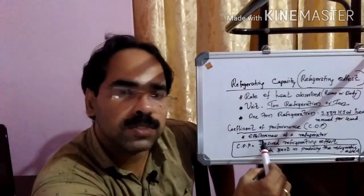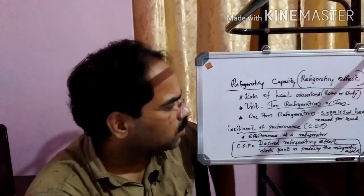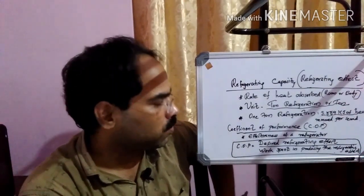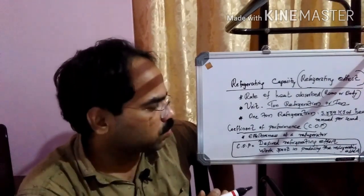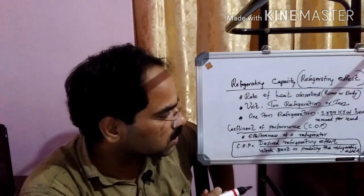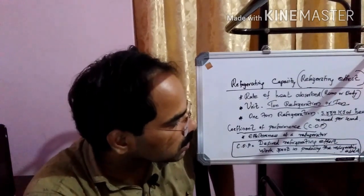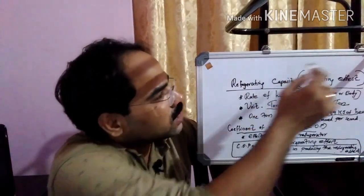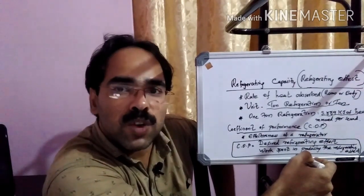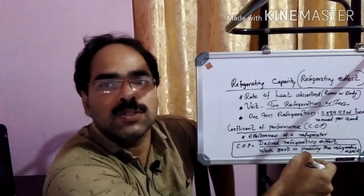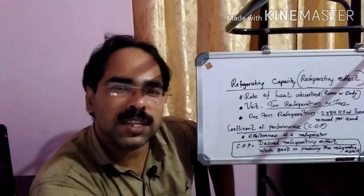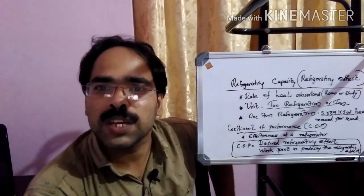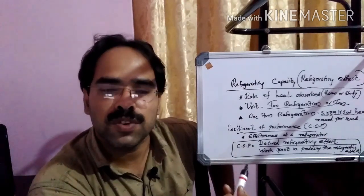Another term here we are using is coefficient of performance. The effectiveness of a refrigerator can be represented by the coefficient of performance. COP is a ratio — what is the ratio? It is the desired refrigerating capacity with respect to the work spent in producing the refrigerating effect. That means the refrigerating capacity or refrigerating effect with respect to what level of work we are spending for the same purpose — that is the coefficient of performance.